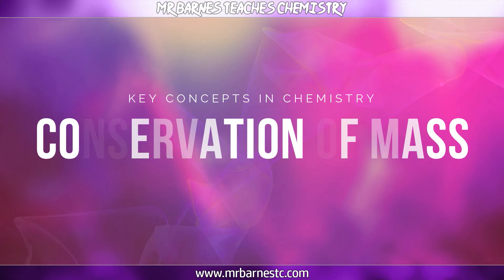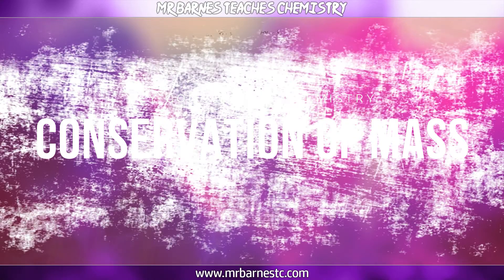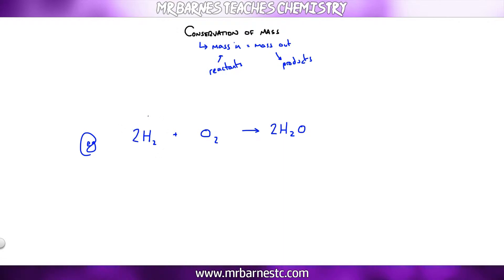The next section covers conservation of mass. You need to explain what it is and work out maximum mass calculations. Simply put, the mass that you put into a reaction is always the mass that you get out — reactants equal products. For example, if I react 4 grams of hydrogen with 32 grams of oxygen, my total reactant mass is 36 grams, therefore my product mass must also be 36 grams.